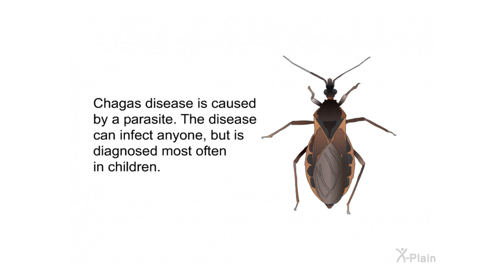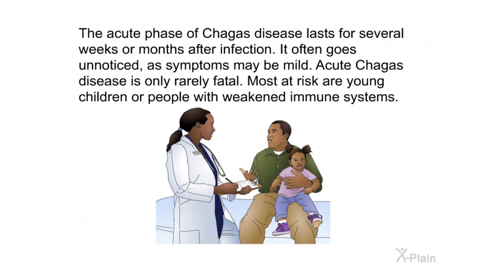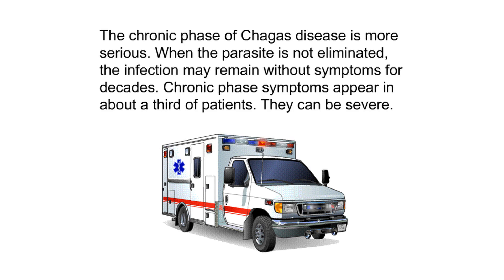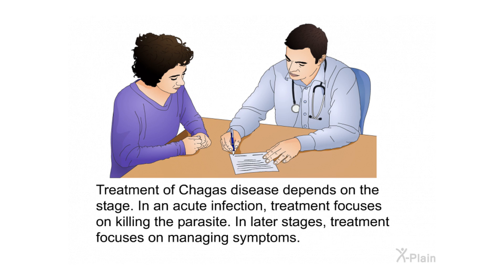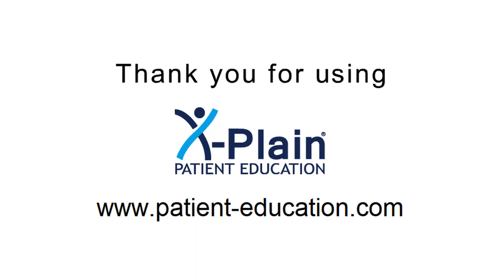In summary: Chagas disease is caused by a parasite and can infect anyone, though it is diagnosed most often in children. The acute phase lasts several weeks or months, often goes unnoticed, and is rarely fatal. The chronic phase is more serious, with symptoms appearing in about a third of patients that can be severe. Treatment depends on the stage — focusing on killing the parasite in acute infections and managing symptoms in later stages. Thank you for using X-Plain.